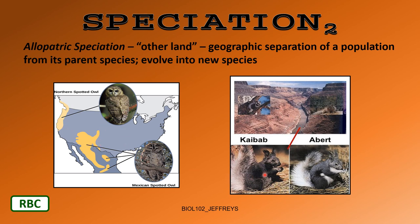Another example: two different squirrel species are genetically similar, indicating they evolved from the same parental species. But because of the Grand Canyon between them, one species lives on one side, the other on the other side — they can never reproduce. Two species evolved from a common ancestor, separated by the gulf of the Grand Canyon. That's allopatric speciation.